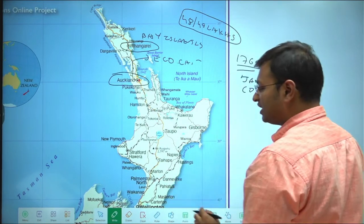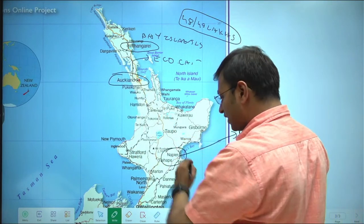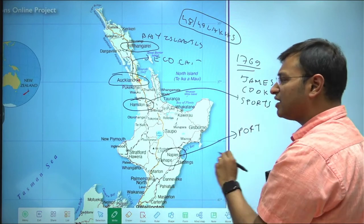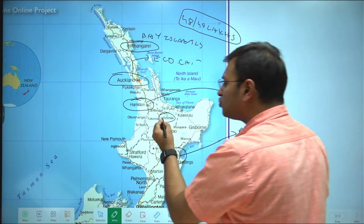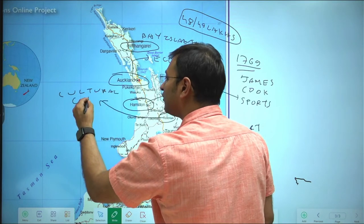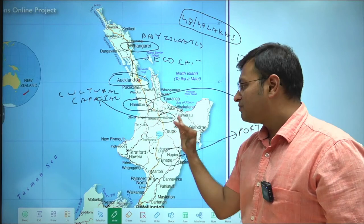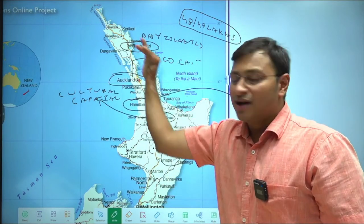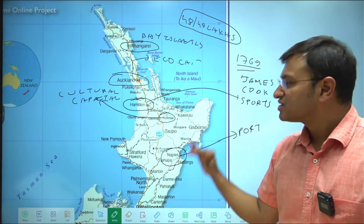After Auckland you have Whangarei and the Bay of Islands. After that there is an important port city called Napier. In between Auckland and Napier you have Hamilton — important for sports with a very good cricket stadium. Then there is Rotorua — the cultural capital of New Zealand, where the Maori people primarily reside in the northern island. Auckland is economic capital, Whangarei is where Cook entered, Napier is an important port city.